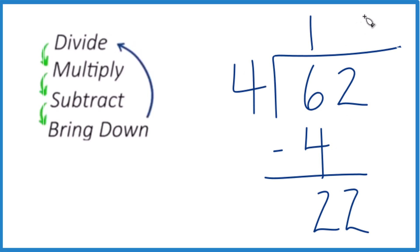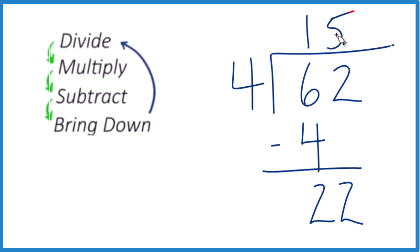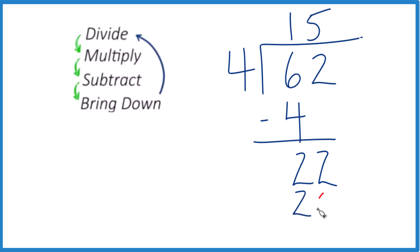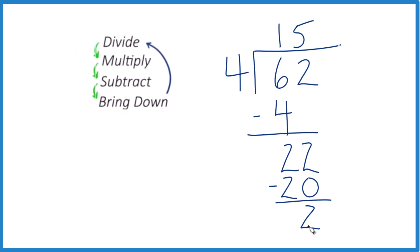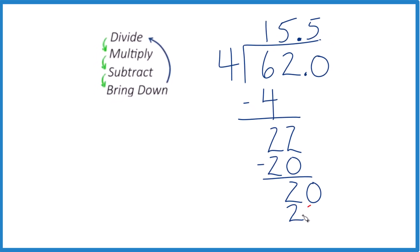4 goes into 22. Let's see — 5 times 4 is 20. We subtract and we get 2. 4 doesn't go into 2 and there's nothing to bring down. So here's how I think about it: 62 is the same as 62.0. So let's put a decimal point up here, and we can bring that 0 down. Now 4 goes into 20 five times. 5 times 4 is 20.